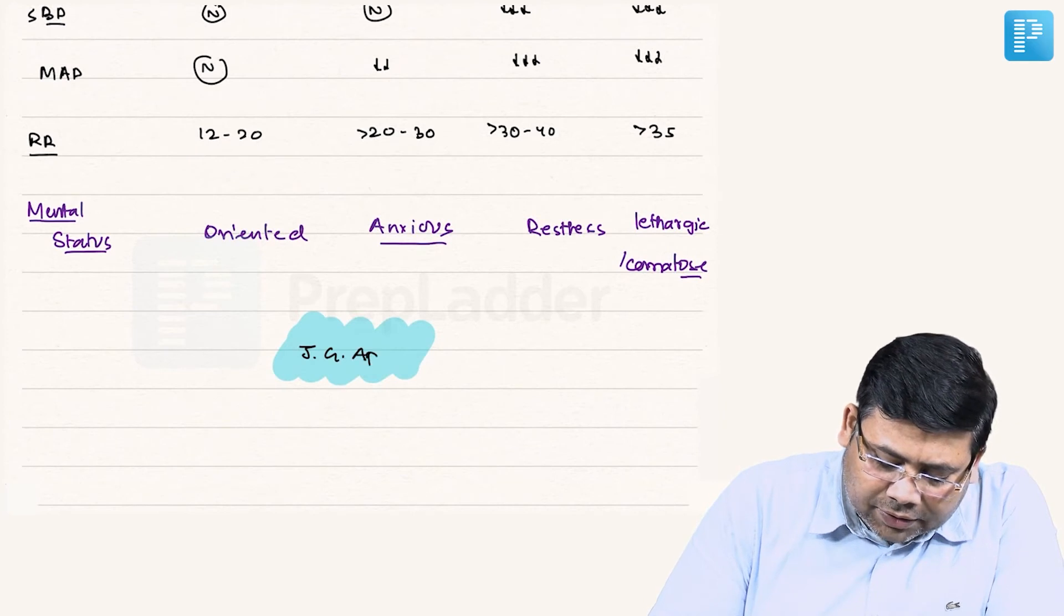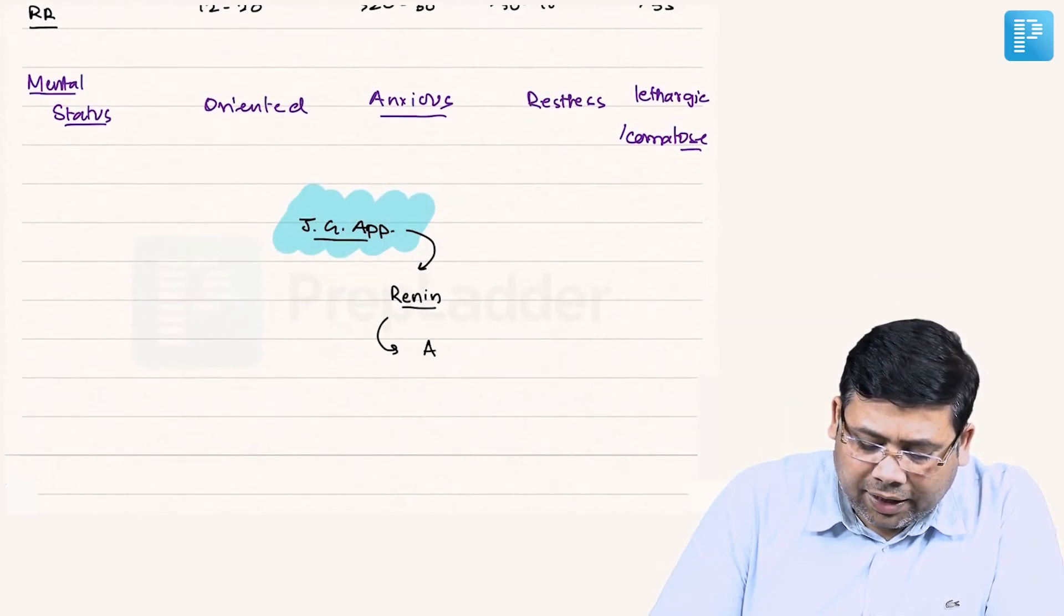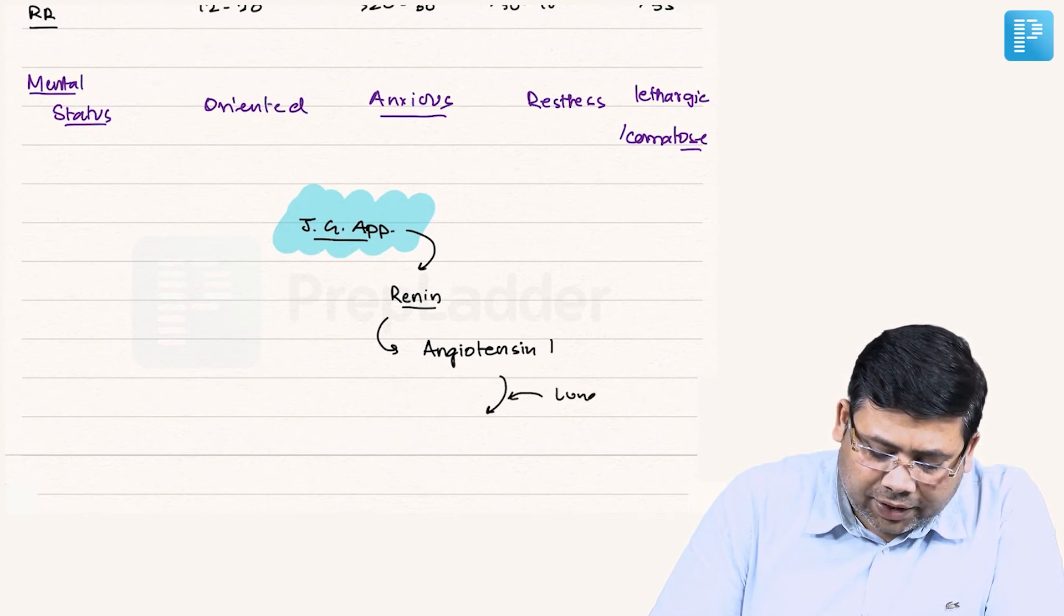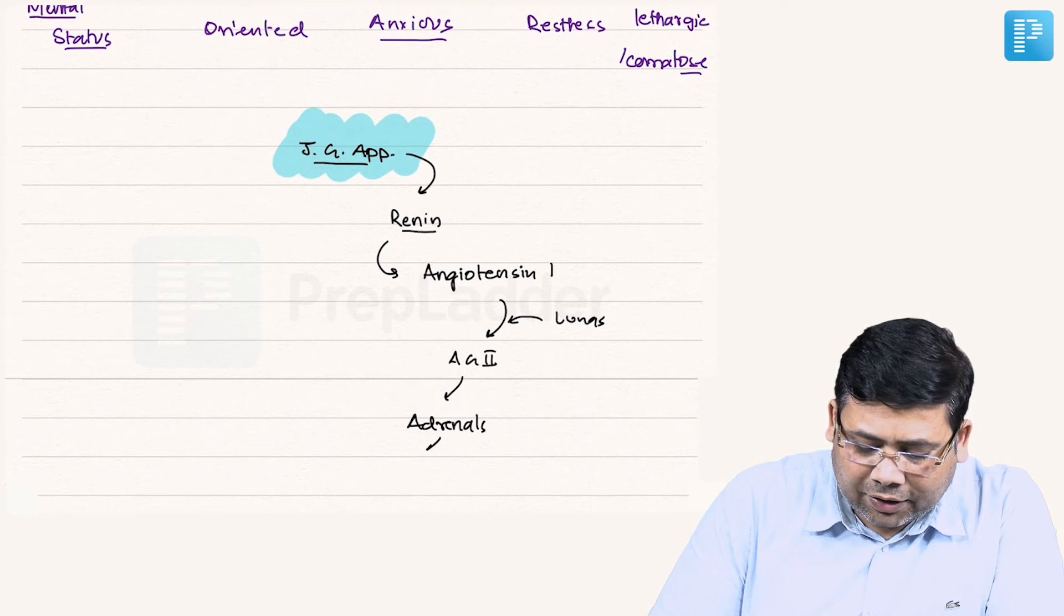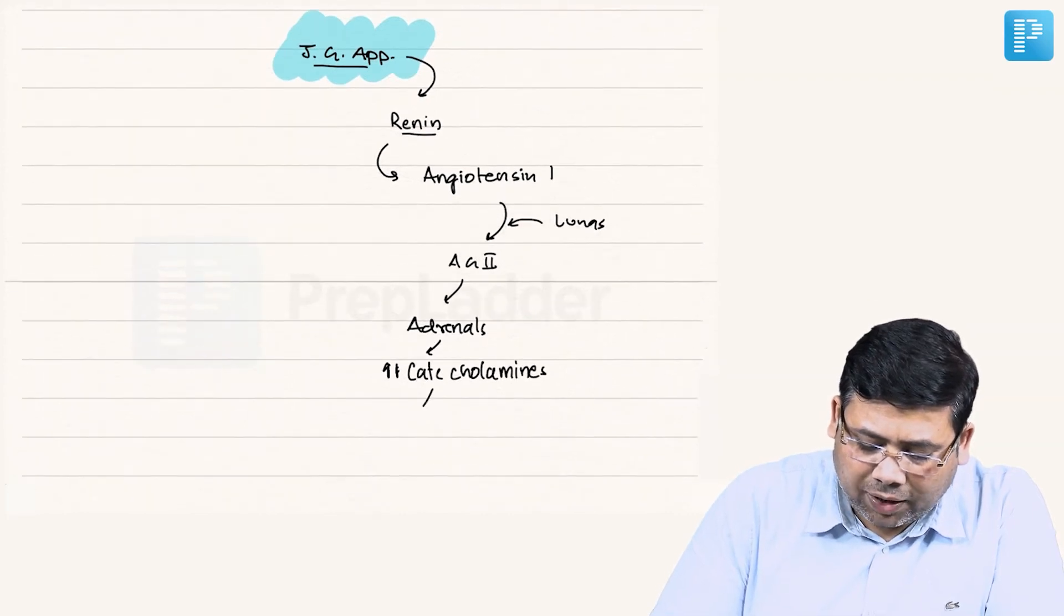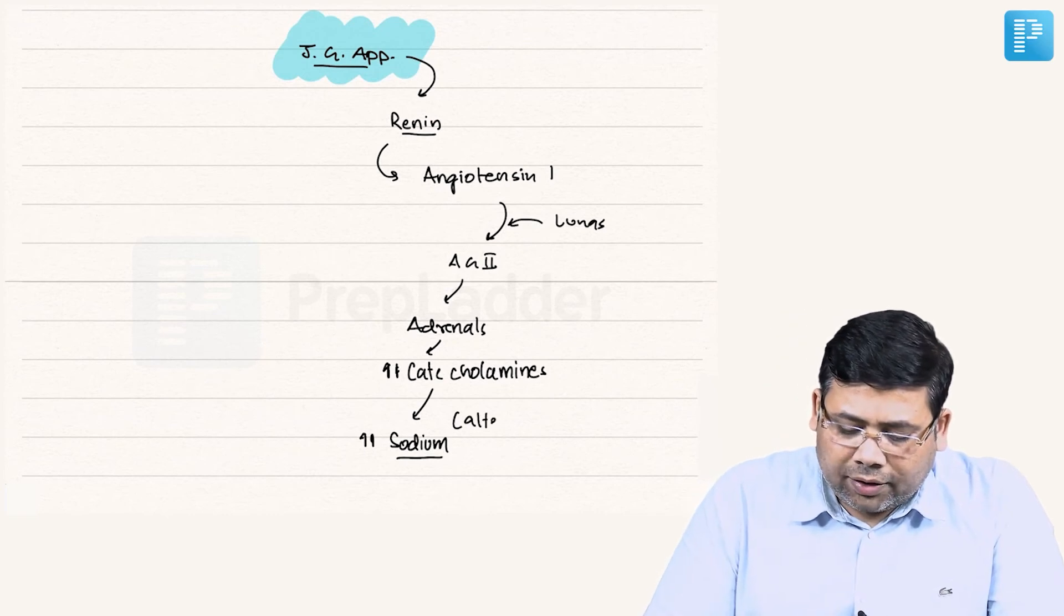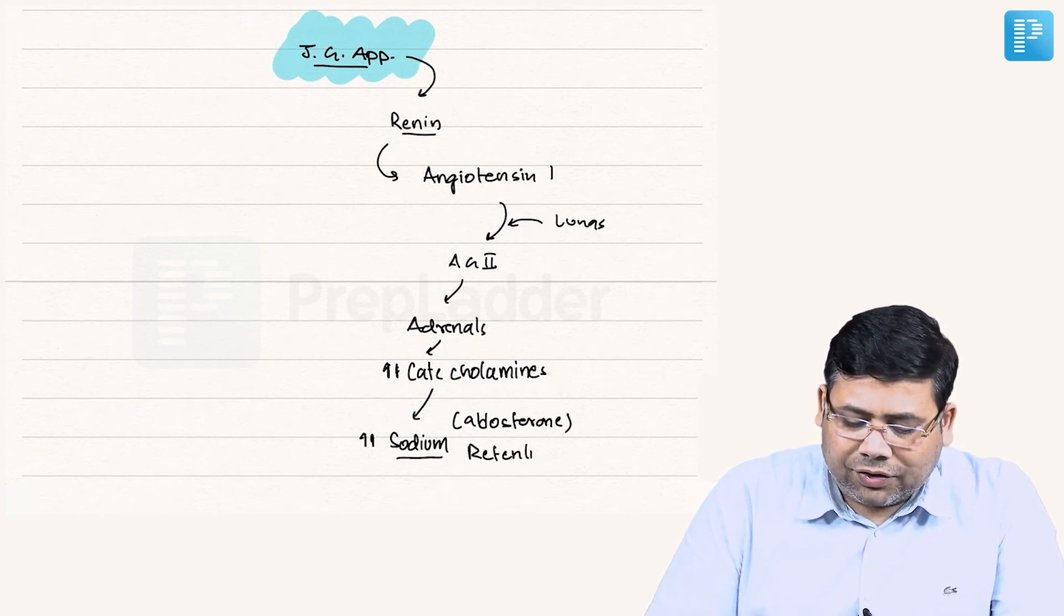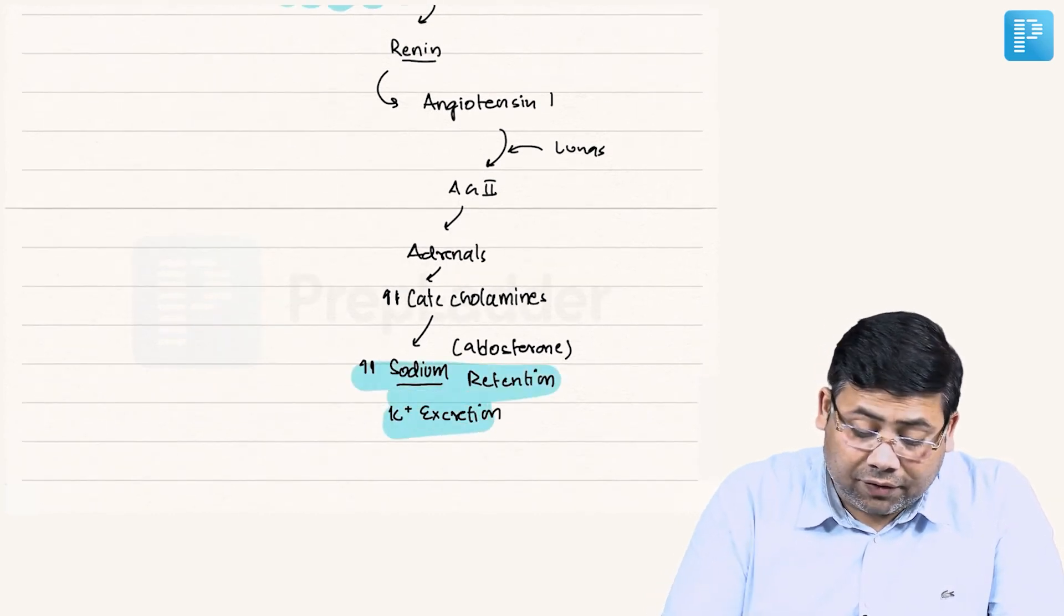The juxtaglomerular apparatus will release renin. Renin will result in release of angiotensin, and angiotensin 1 will be converted in the lungs to angiotensin 2. Angiotensin 2 will stimulate the adrenal to increase the catecholamines. If there is increase in catecholamines, there will be increased sodium absorption. Under the influence of aldosterone, there is increased sodium retention in exchange of potassium. So K+ excretion and sodium retention. Point number 1 in the MCQ is clear.